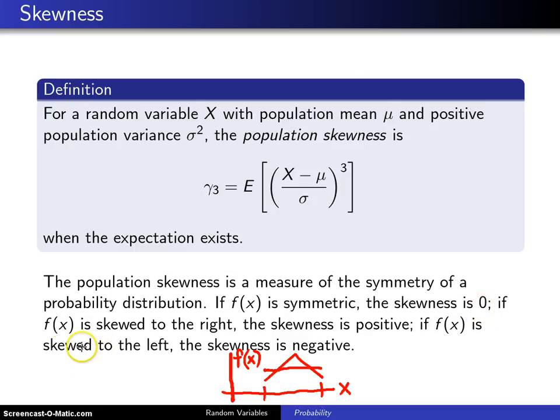And if f of x is skewed to the right, then the skewness is positive. Here is the general shape of a distribution that is skewed to the right. It might look something like this, it's got a long right-hand tail. And so that would be gamma 3 positive. This one would be gamma 3 zero.